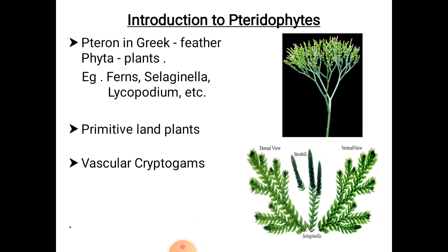The pteridophytes are lower vascular plants, commonly called vascular cryptogams. The term pteridophyte is derived from two Greek words: pteron means feather and phyta means plants. It means plants with feather-like fronds or leaves — examples include ferns, Selaginella, Lycopodium, etc.